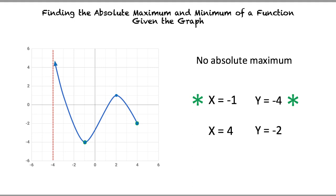I think I understand the rules on determining absolute maximums and minimums. The absolute maximum is the highest point or peak of a function, while the absolute minimum is the lowest. There are a couple of exceptions: if the highest point is a hole, there is no absolute maximum; if the lowest point is a hole, there is no absolute minimum. Finally, if a function moves to infinity in an upward direction, there is no maximum, and if it goes downward, there is no minimum. Exactly — it looks like you have a clear understanding of this topic.